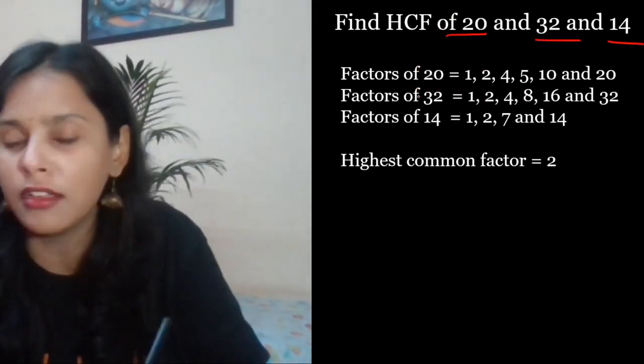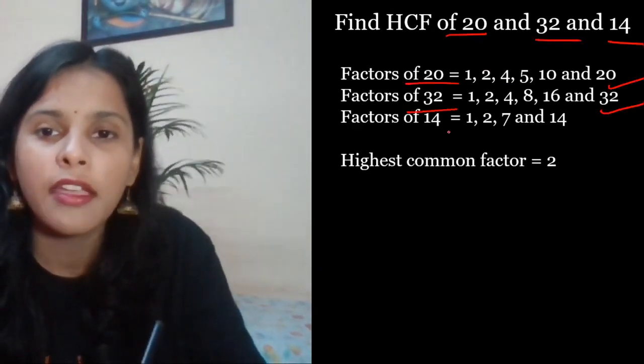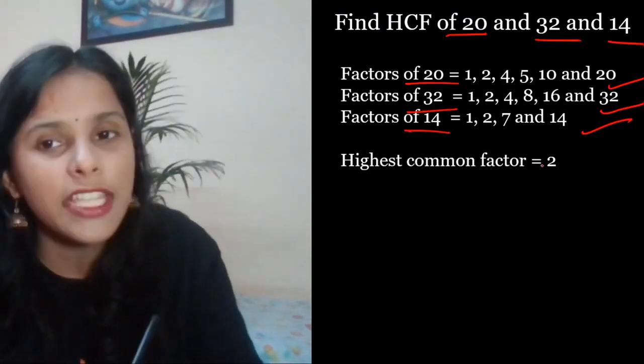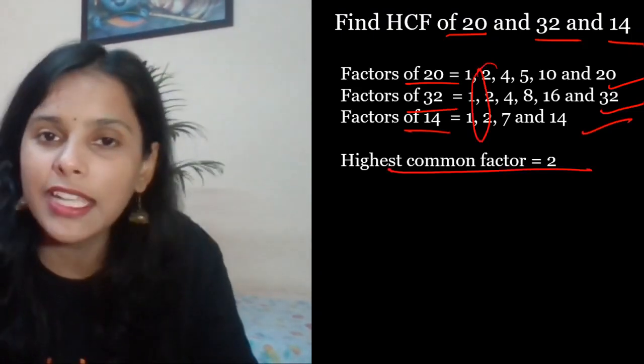Aagla example: 20, 32, 14. Factor of 20 yee ho gai, factor of 32 yee ho gai, factor of 14 yee ho gai. Highest common factor gya hai 2 only. Tho HCF is 2. Ho gya na 7 seconds bhoom, 7 seconds bhoi nahi lagenga yaar.